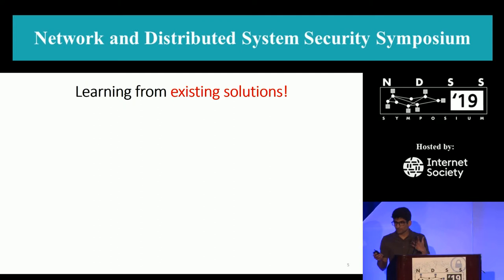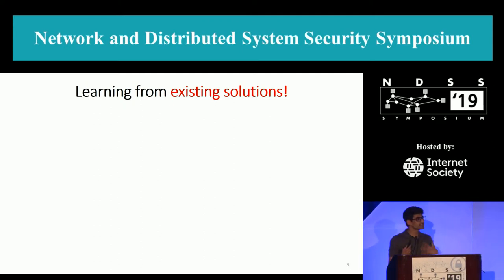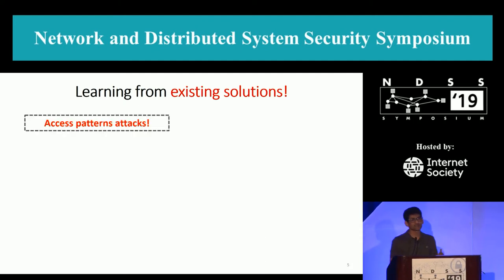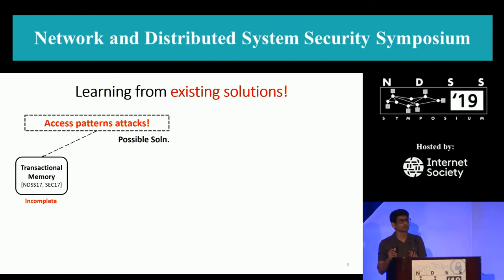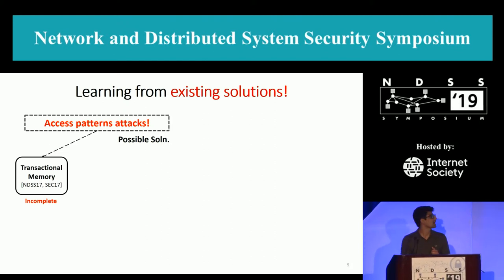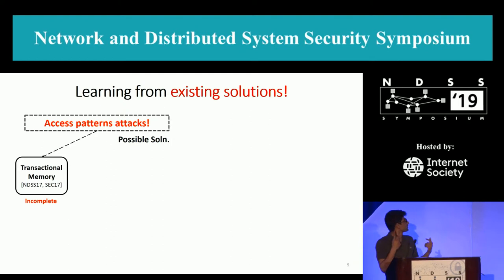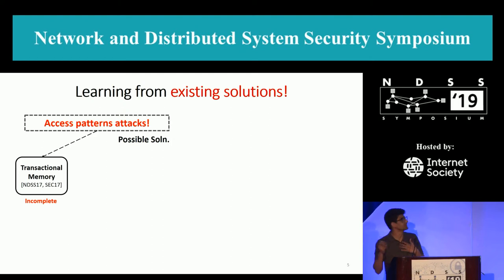There are a lot of existing papers that talk about each of these attacks, and also a lot of papers that talk about solutions. For access pattern attacks — page table, cache, and branch prediction attacks — one existing solution is using transactional memory or Intel TSX to create side-channel-secure programs, secure against page fault and cache attacks. But the problem with those papers is that they can't solve all of the existing side channels within Intel SGX.